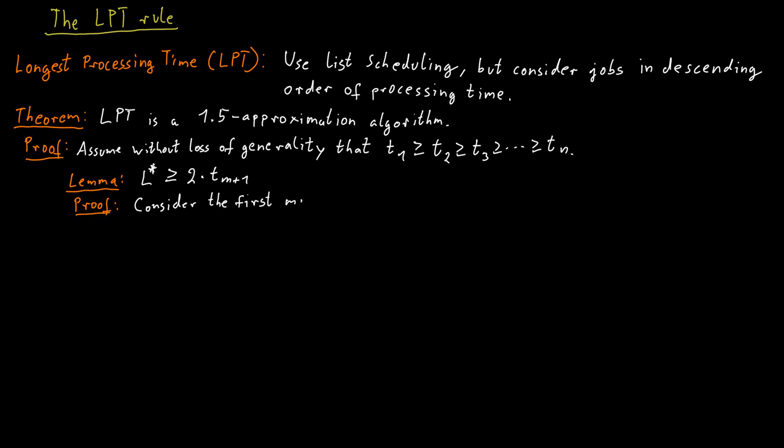Consider the first m plus 1 jobs. Now, because they are ordered in descending order of their processing times, each of those jobs has a processing time that is at least as large as the processing time of the m plus 1th job.